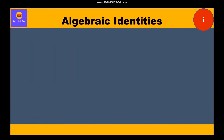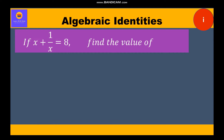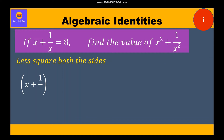It is given: if x plus 1 by x is equal to 8, find the value of x square plus 1 by x square. Now let's start with the solution. It is given x plus 1 by x is equal to 8. Now squaring both the sides, we shall get x plus 1 by x whole square equal to 8 whole square.